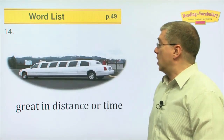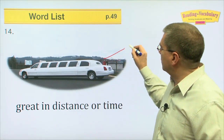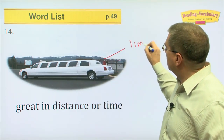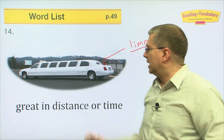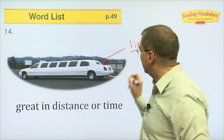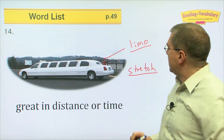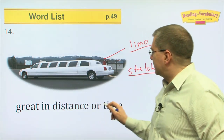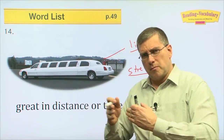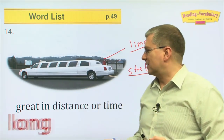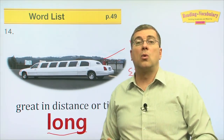Number fourteen — what kind of car is that? That's really long. We call that a limousine, or a limo for short. It's a really long car that looks like it's been stretched. Long means great in distance or time.